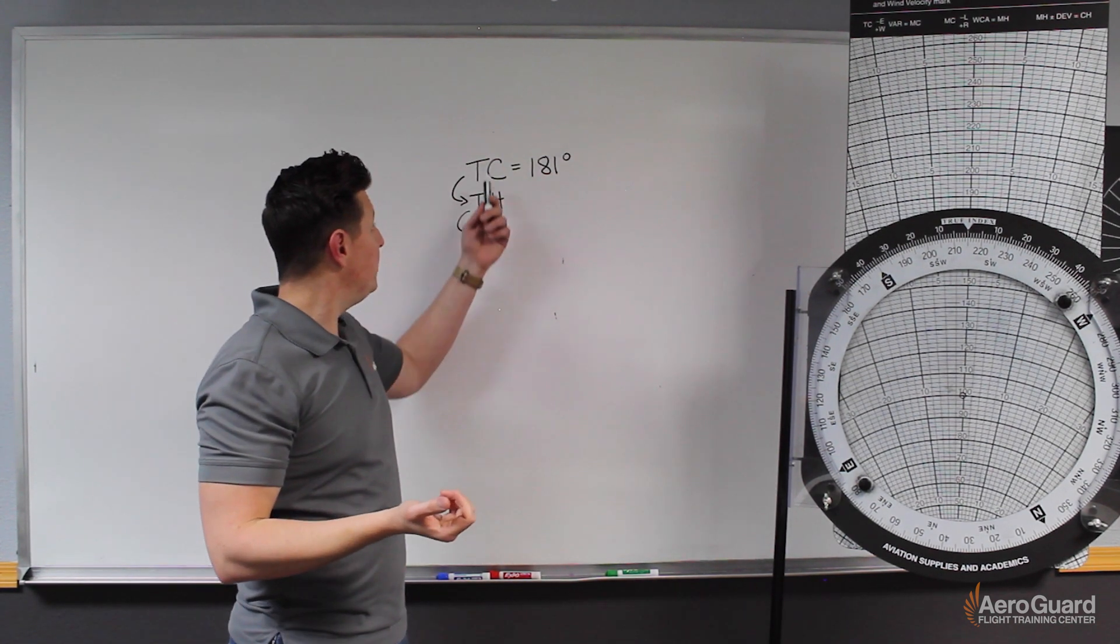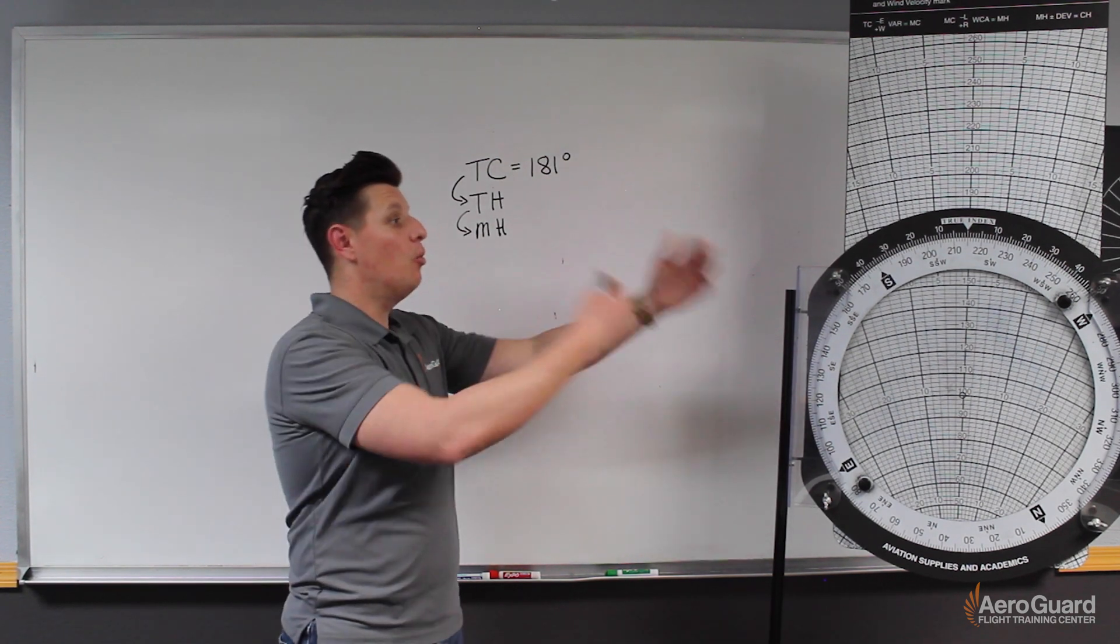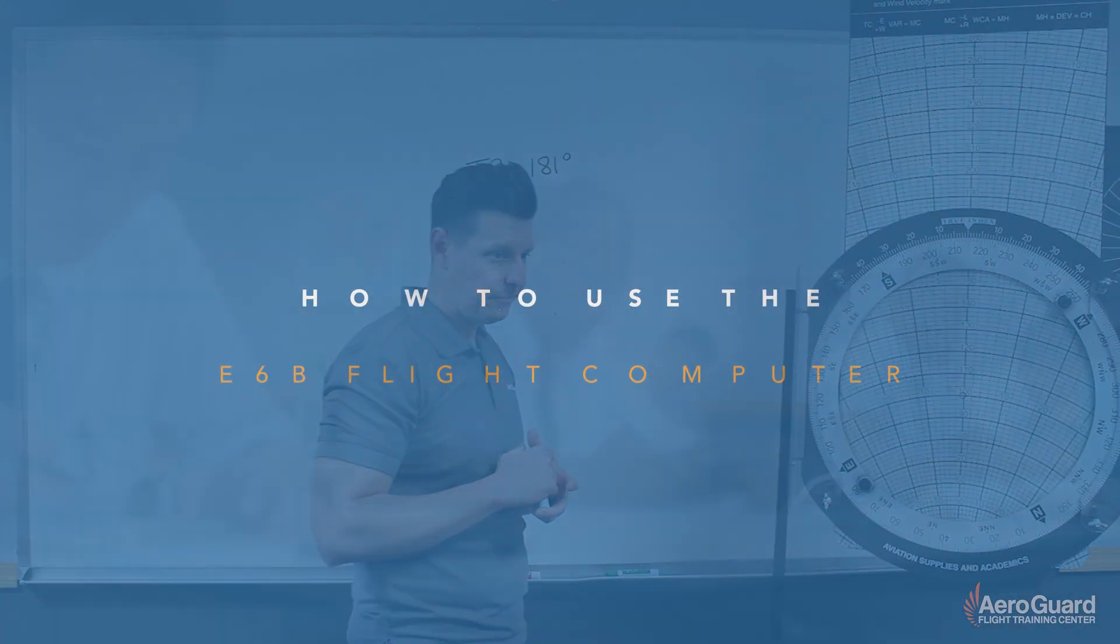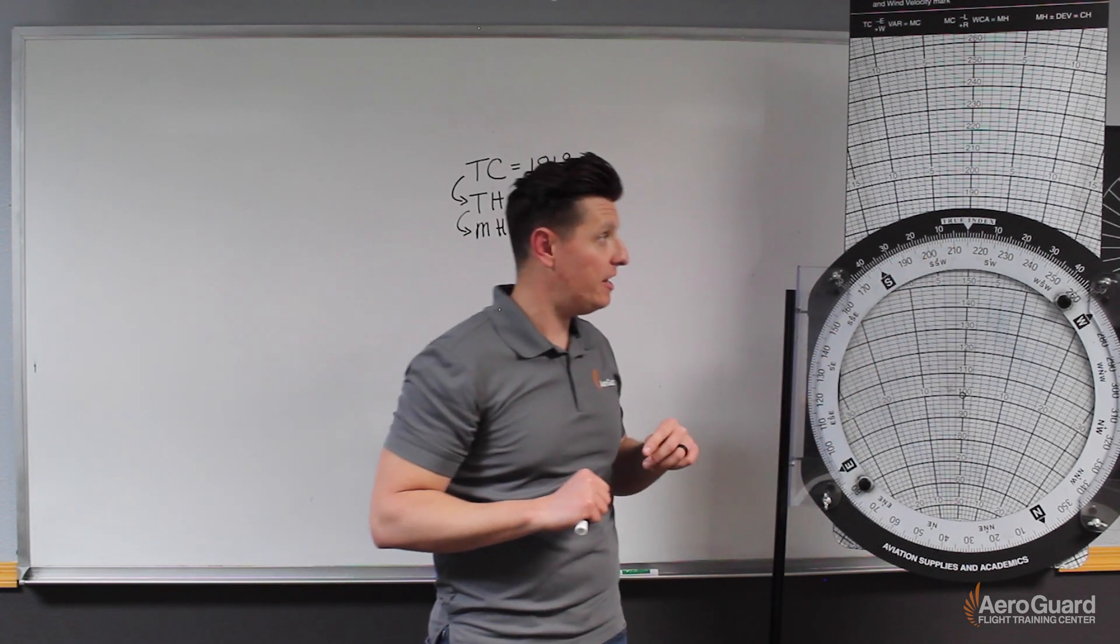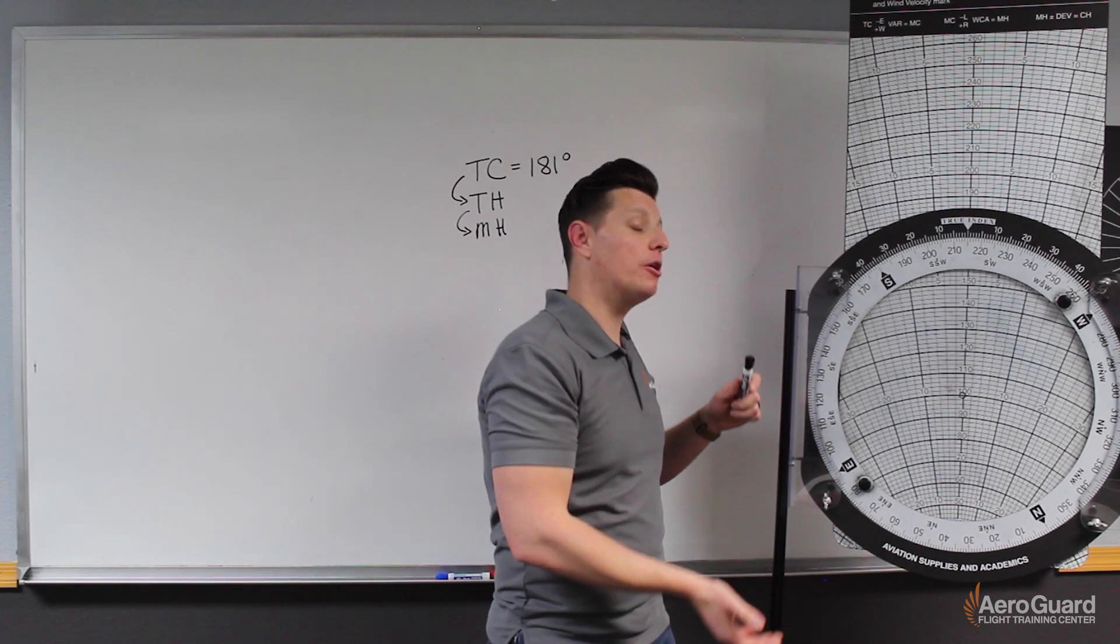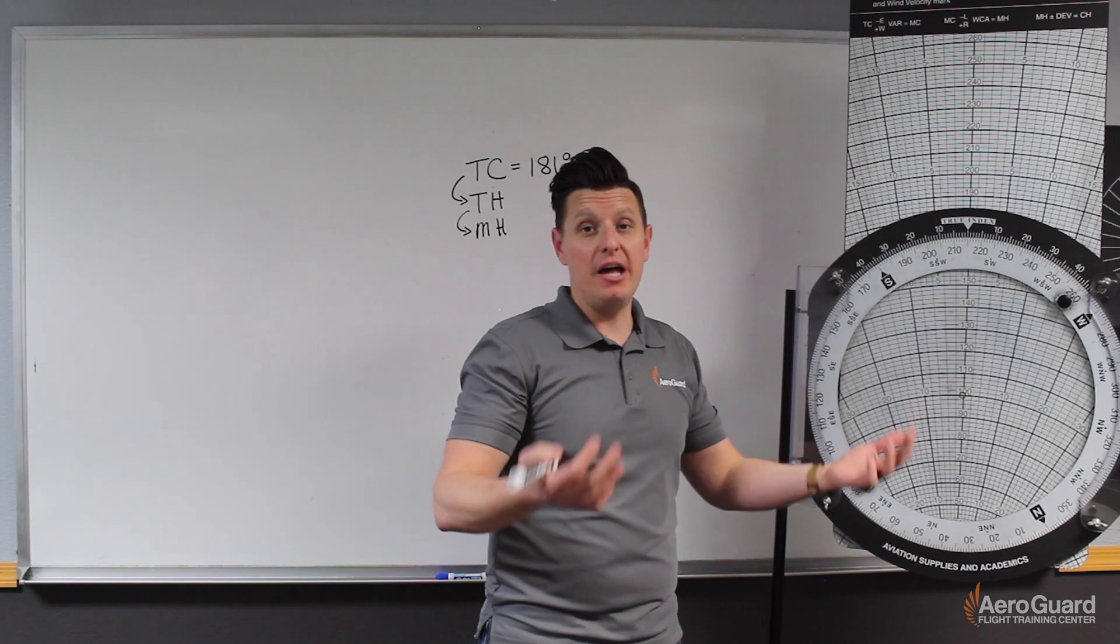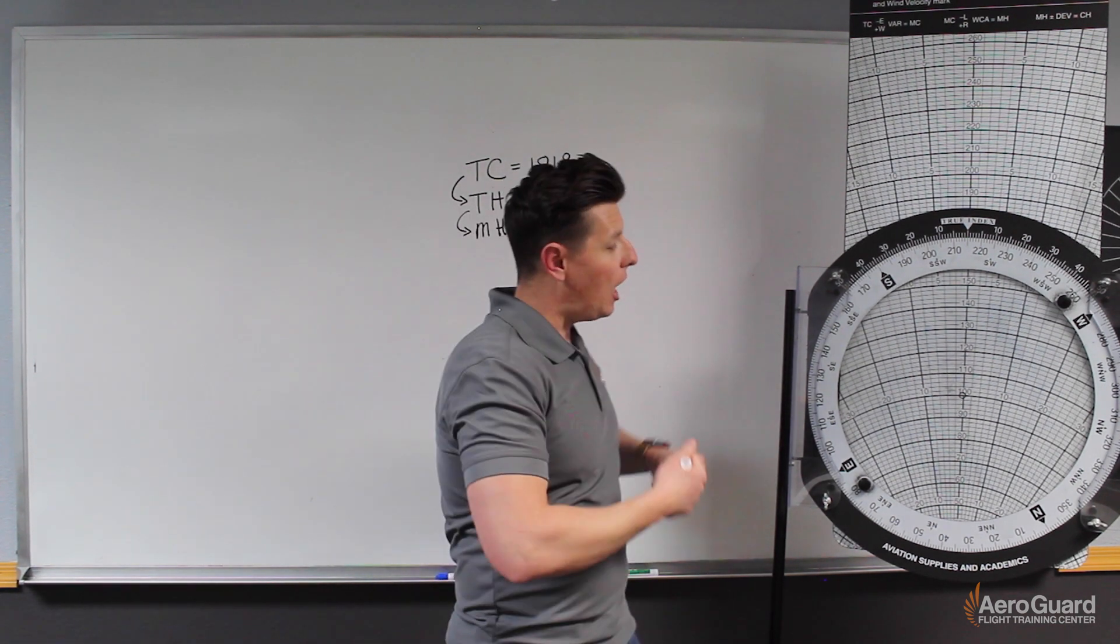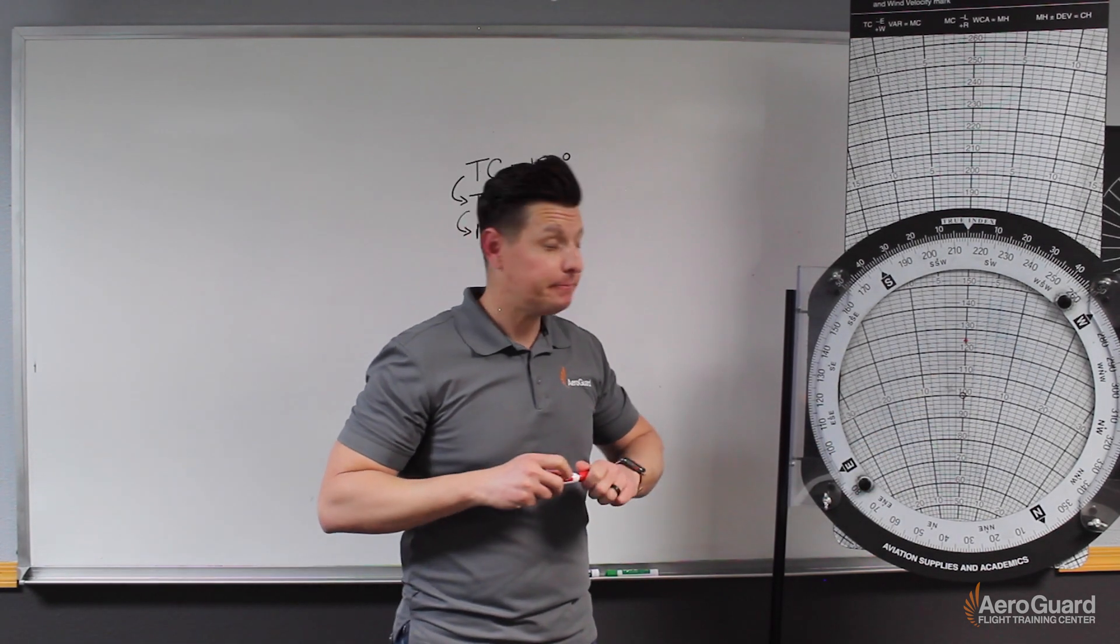So now we need to apply our true course and the other details from the question to determine what the true heading will be. Over to the E6B, our first step is to set our wind direction under the true index. Our wind direction from the question was 215 degrees. Next, it's going to ask us to mark the wind velocity up from the center point. In this case, I have the center point resting on 100. Our wind speed is 25 knots, so I'm going to find 25 knots above 100. At this 125 line is where we will make our wind dot.